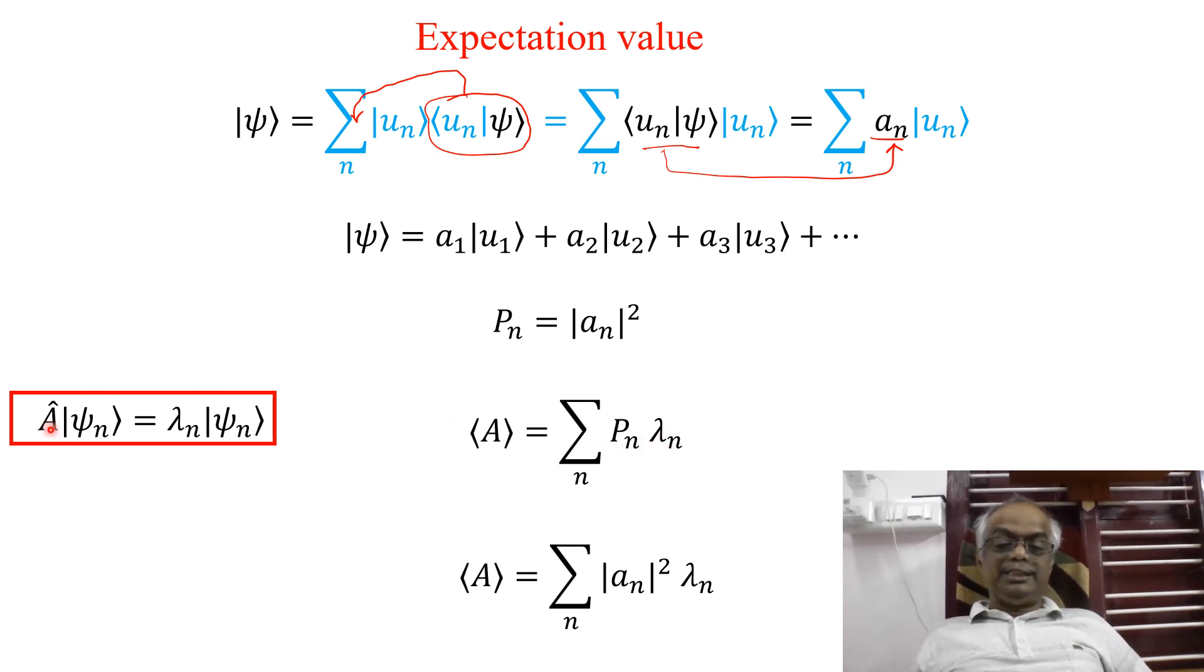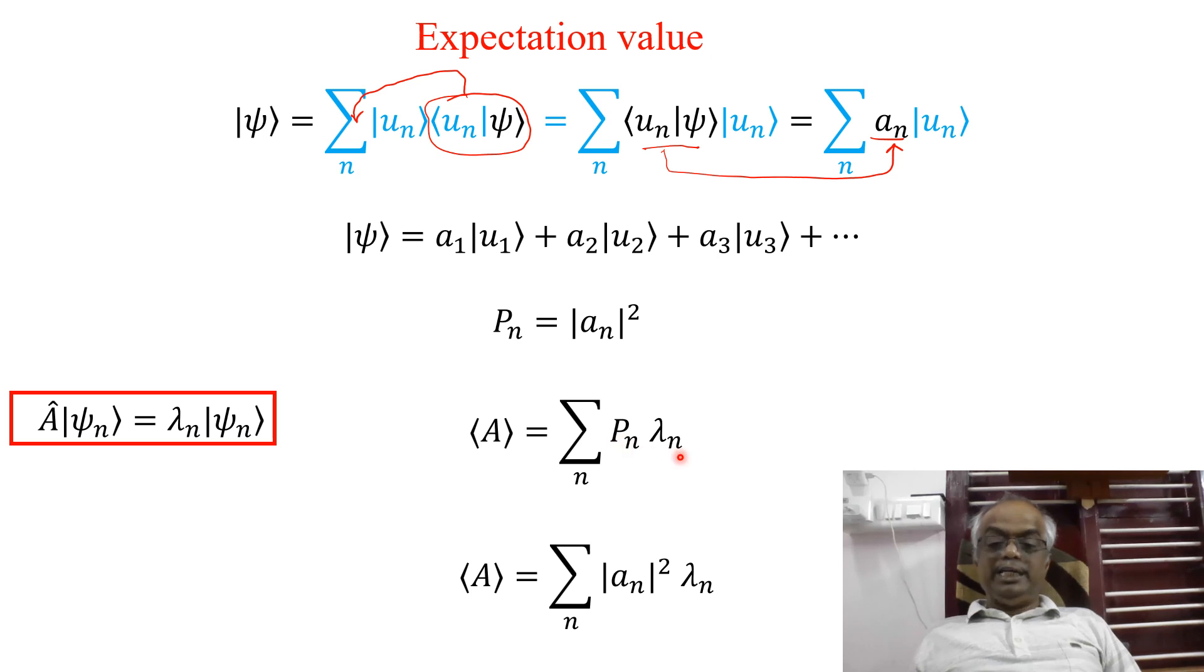So here we know that when operator A act on the wave vector Psi N, you will get the wave function lambda N Psi N. What is Pn here? Pn is modulus AN square. So this lambda N I am keeping as it is. This is the expectation value. The expectation value is equal to summation over N modulus AN square lambda N. This is after all the weighted average. So what is the probability of having a particular eigenvalue and multiply both, you will get weighted average.